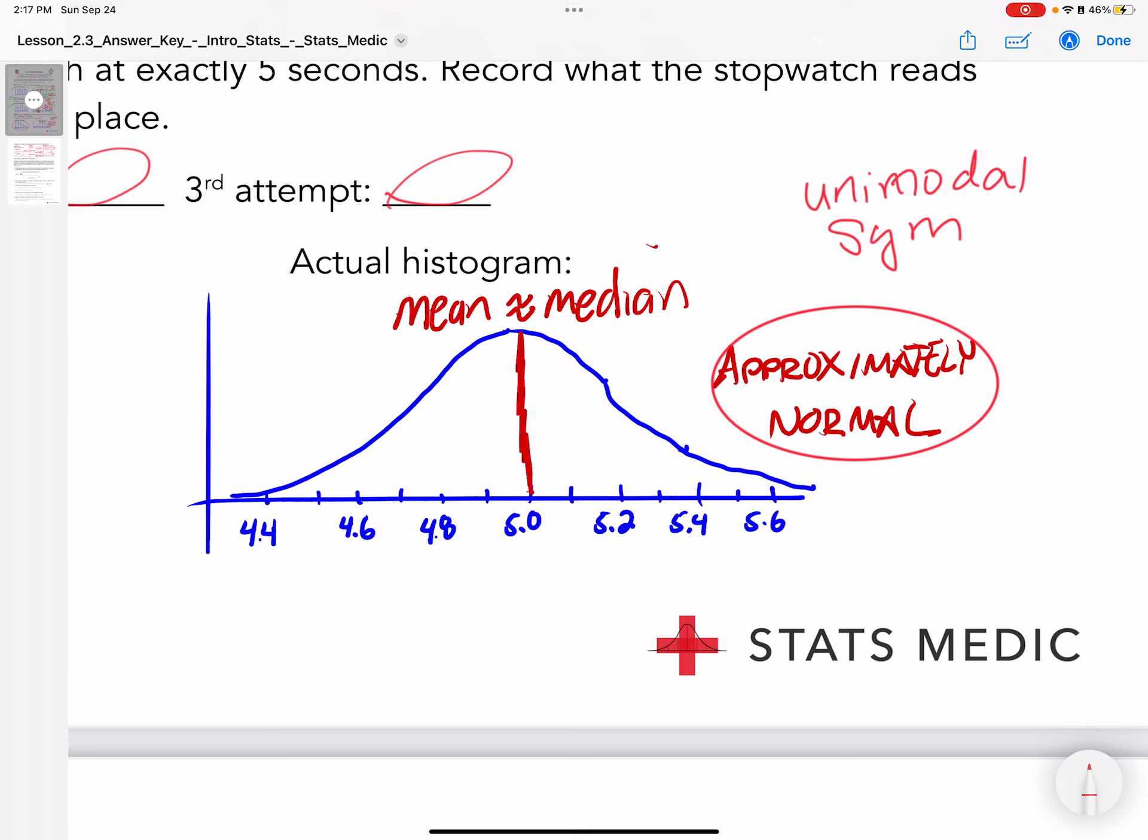The mean and the median are about the same, as you can see, because it's symmetric. The reason it's going to be like this is everybody was aiming for 5 seconds. But the people that were missing were missing a little low and a little high and pretty evenly distributed. That's why we have an even distribution here.